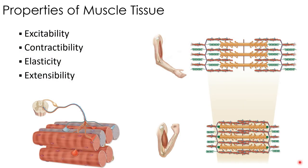All muscle tissue is composed of muscle cells, referred to as muscle fibers — the two terms are synonymous. There are several common properties to all of these muscle cells. One is excitability: the ability of a cell to respond to some type of stimulus. Skeletal muscles respond to stimulation by the nervous system through neurotransmitters being released from neurons, and some smooth muscle also responds to circulating hormones.